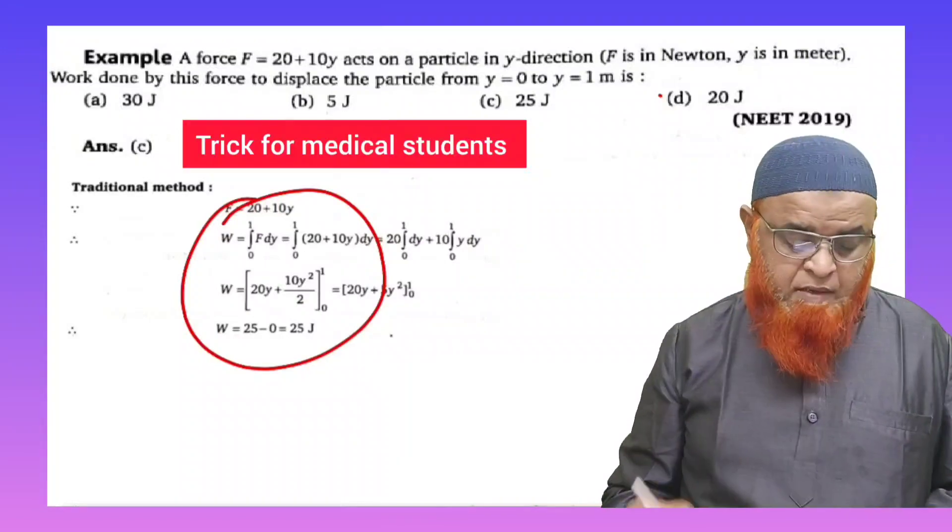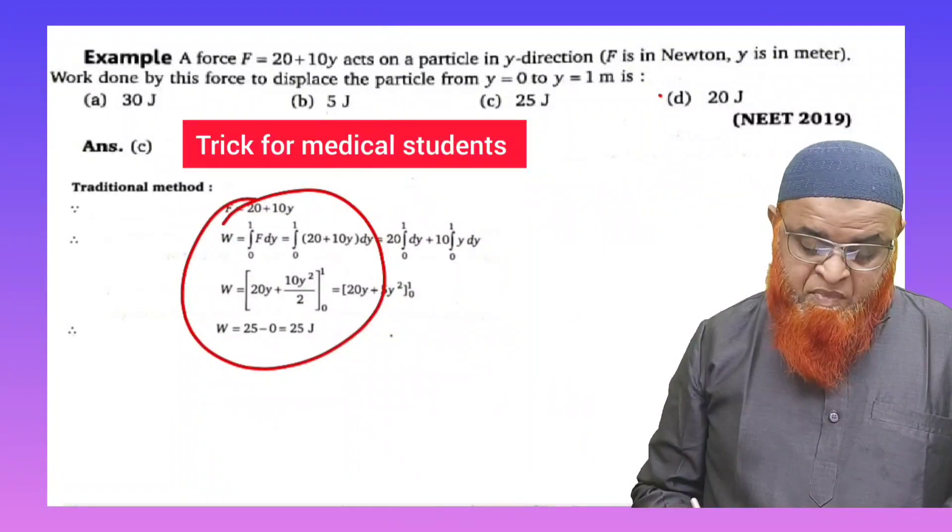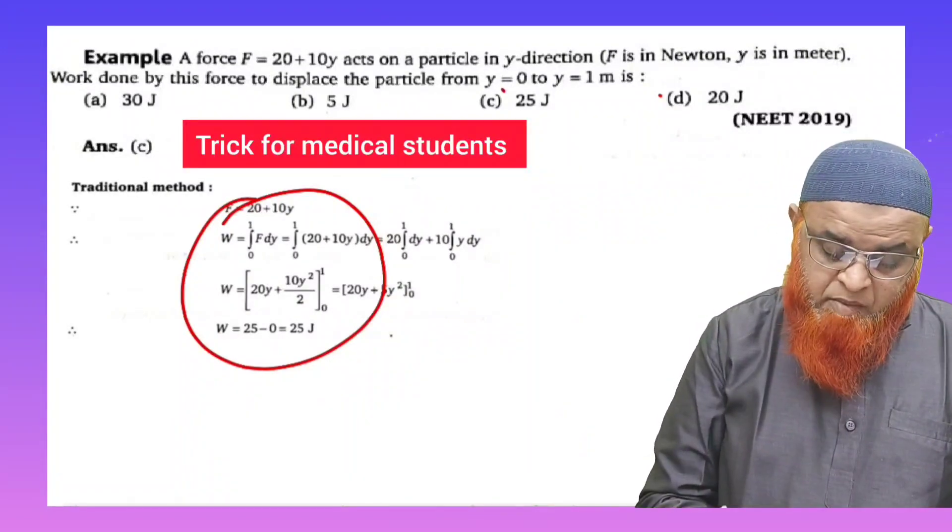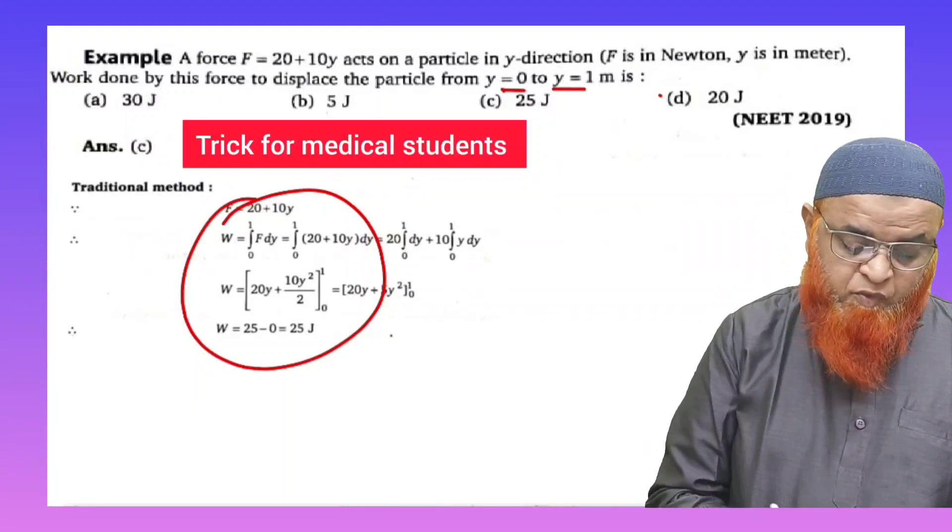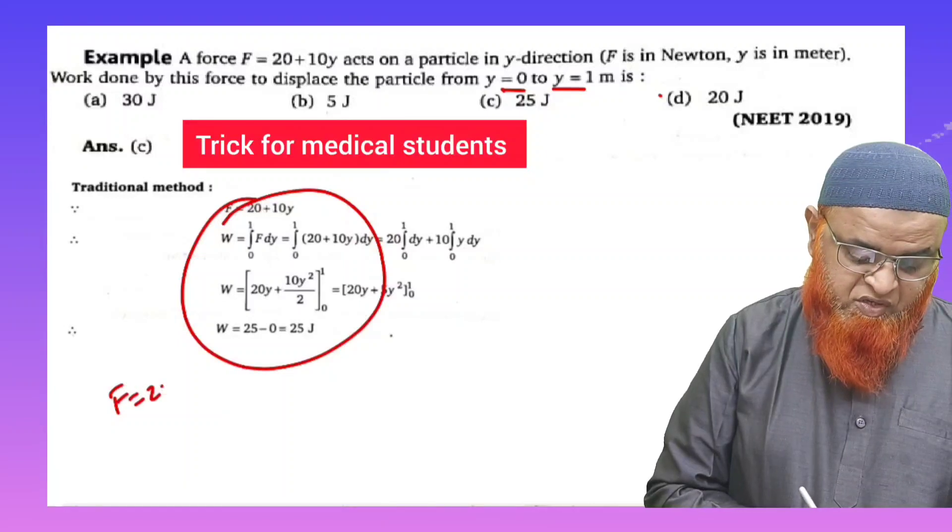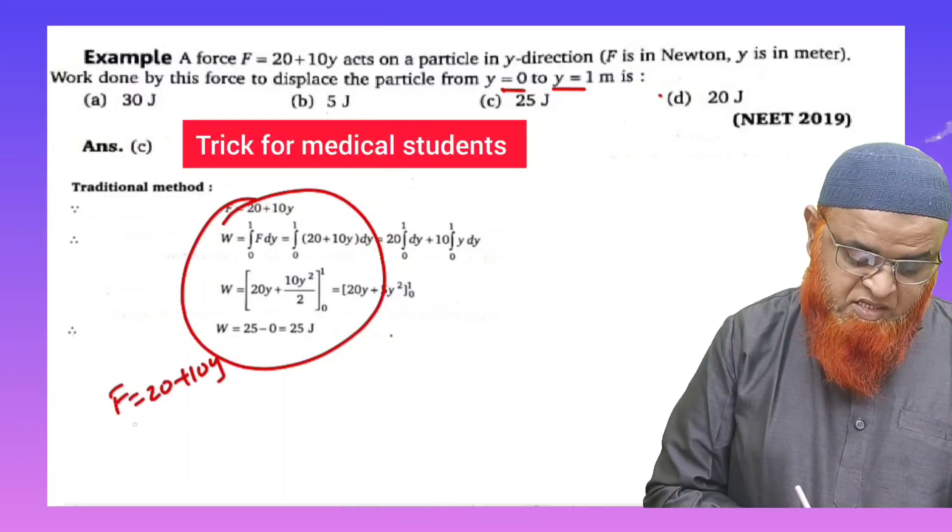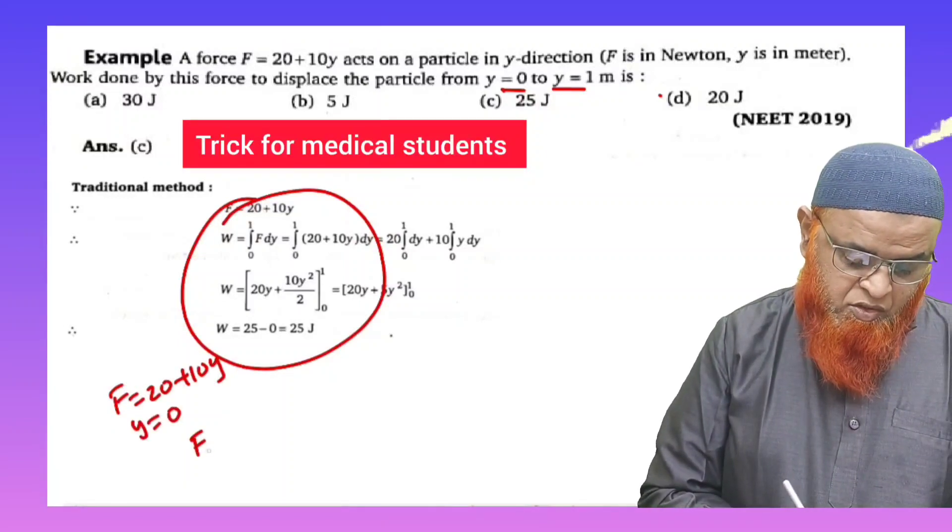You can just see here if you observe in this problem it is given that y is equal to 0 and y is equal to 1. See here, for example, if y is equal to 0, you all know that F is equal to 20 plus 10y. So if y is equal to 0, F1 will become 20 plus 10 into 0.